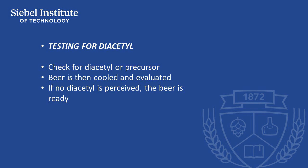When sampling beer from the fermenter for sensory evaluation to check for diacetyl or precursor, it's imperative that the beer is heated to roughly 60 degrees Celsius or 140 Fahrenheit in order to force all precursor to be converted to diacetyl, as you cannot taste the precursor. The beer is then cooled and evaluated, and if no diacetyl is perceived, the beer is ready for further processing and packaging.